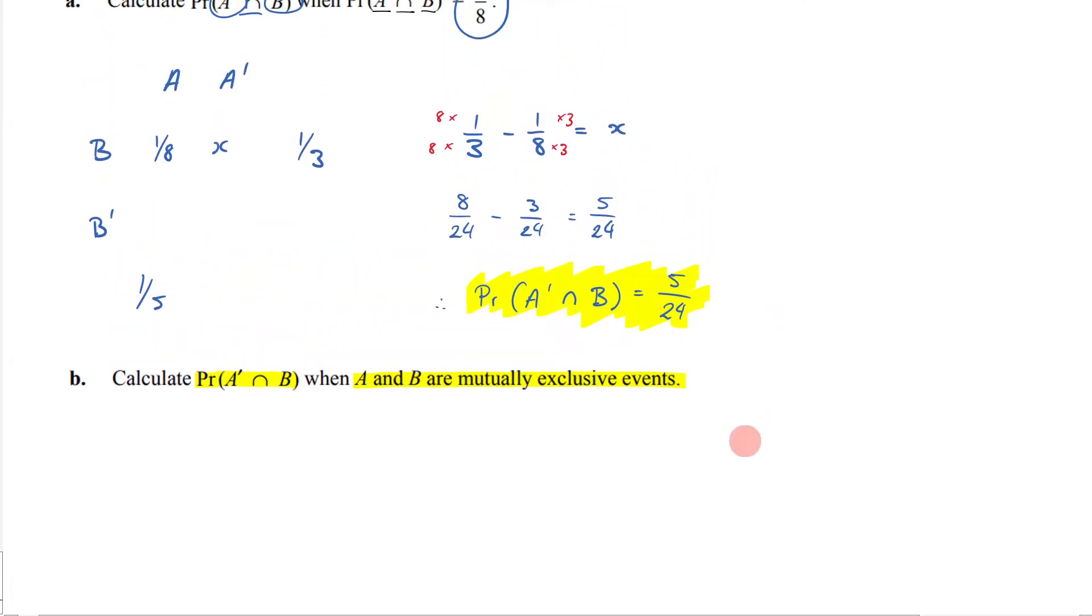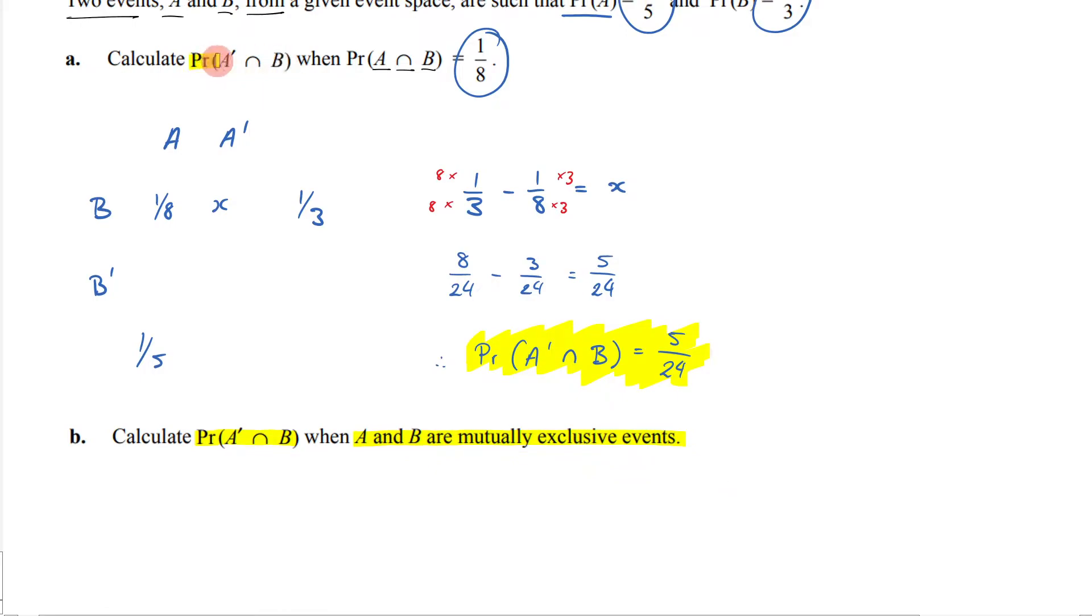Okay, so as you can see, it's getting us to find the same thing as we found here, this right there. But now, instead of having an intersection of 1/8,